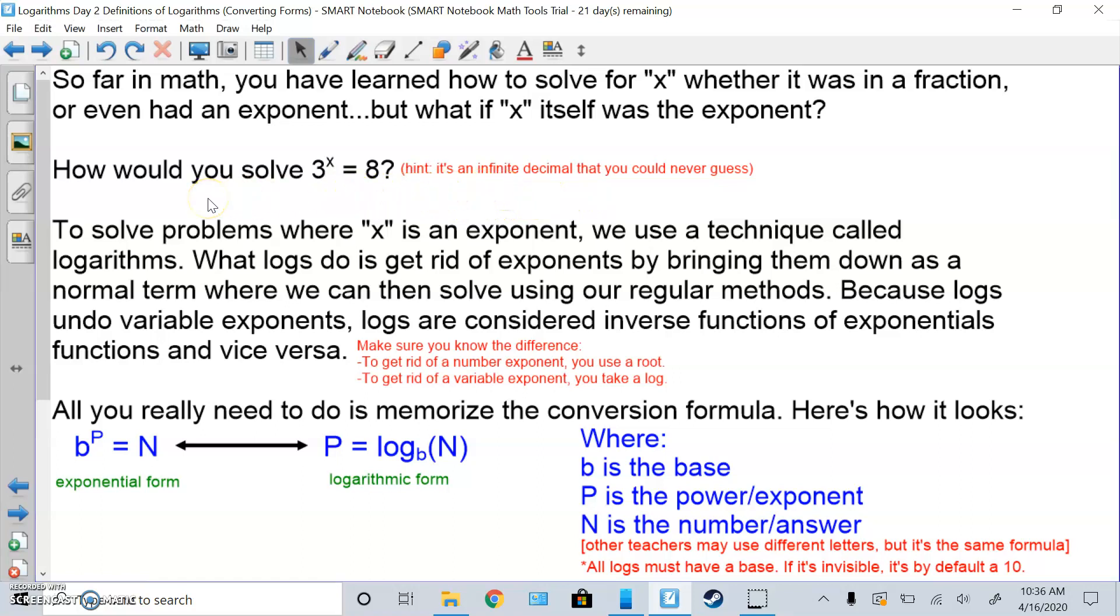To solve problems where x is the exponent, we use a technique called logarithms, or logs for short. What logs do is get rid of exponents by bringing them down as a normal term, where we can then solve using our regular methods, such as getting x by itself if it's linear, or factoring or quadratic formula if it's quadratic. Because logs undo variable exponents, and the exponent must be a letter, it cannot be a number.